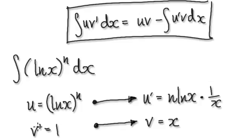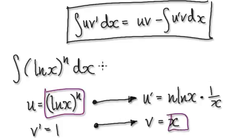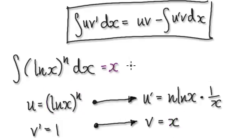And then v, well, if v' equals 1, then v equals x. So now follow this formula here, so u times v, well, u is here, times v, so that would be x natural log of x,